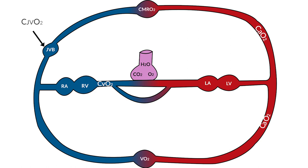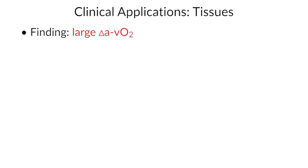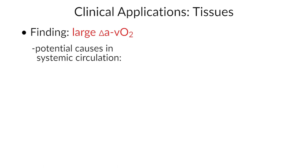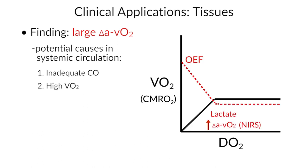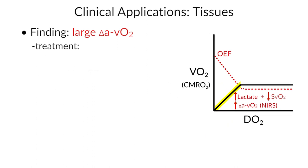Now that we've identified how to compare upstream to downstream, let's say clinically we've identified a large AVO2 difference — how do we use that information? Number one, we have to ask the question: why is this AVO2 difference large? Well, in the case of the systemic circulation, it could be that your cardiac output is inadequate, or alternatively, it could be that your consumption of oxygen is high. So, we identify that we're on the supply-dependent portion of the curve, evidenced by an elevated lactate and a mixed venous saturation that's low. What are we going to do to fix it? We can treat DO2 to improve it, or we can reduce VO2.